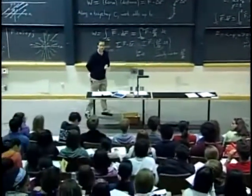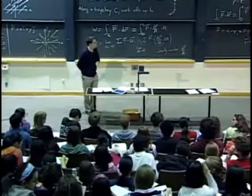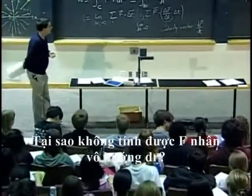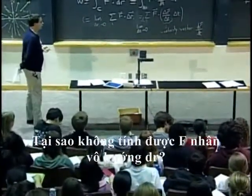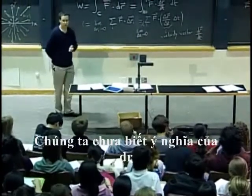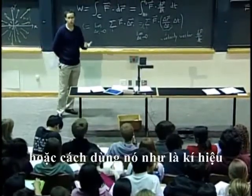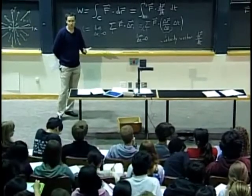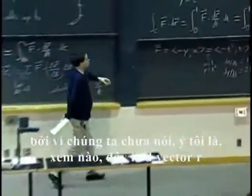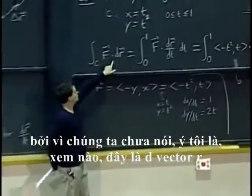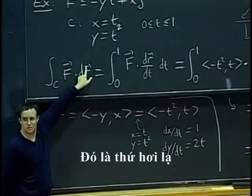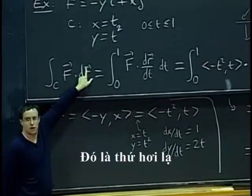Why can't you just do f dot dr? Well, soon we will be able to. We don't know yet what dr means or how to use it as a symbol. This is a d vector r — that is kind of a strange thing to have.